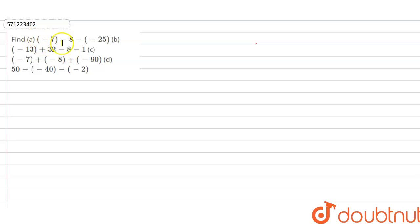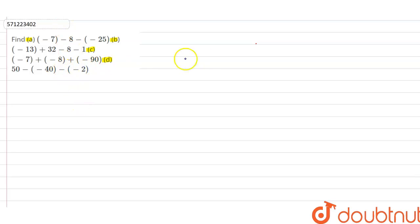The given question is in four parts. The first part is A, the second part is B, the third part is C, and the fourth part is D, and here we have to find the value of each part. So before solving this question, we will discuss some concepts.